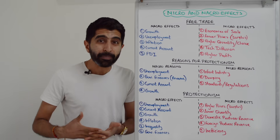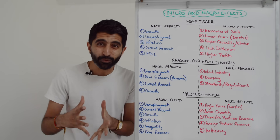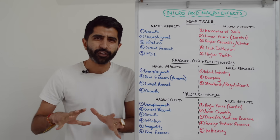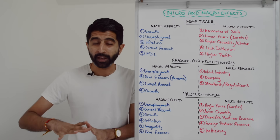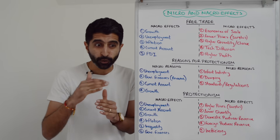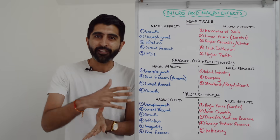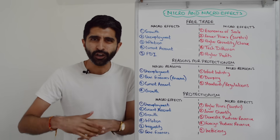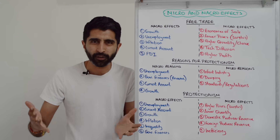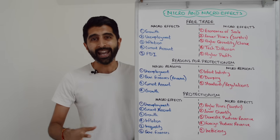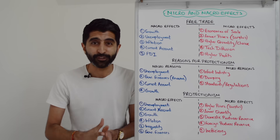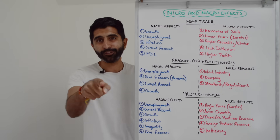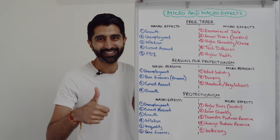There we have it. As simple as that, and that's really what you should be taking away. Make sure that for all the topic areas that could feature in Paper 3 — I've made a video guiding you on what those topic areas are — you're doing exactly this: micro and macro effects, and where relevant, reasons, policies, and causes. It's a simple task to do, so make sure you do it. Thank you so much for watching, and I'll see you in future Paper 3 videos.